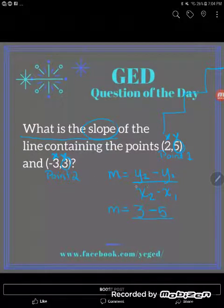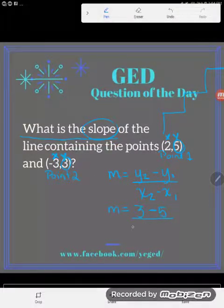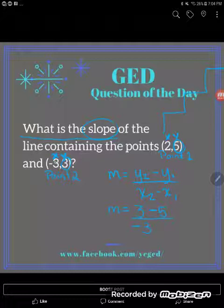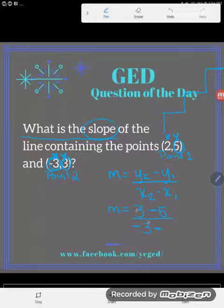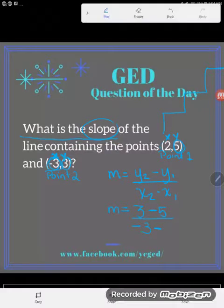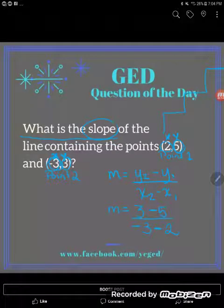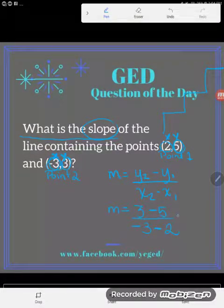And I'm going to put that over. I'm going to take the second X. That's negative 3. Negative 3. This is the second X. And from that I'm going to subtract the first X, the X from point 1. And that's 2.